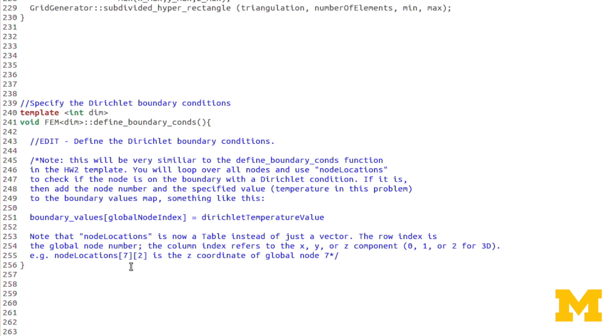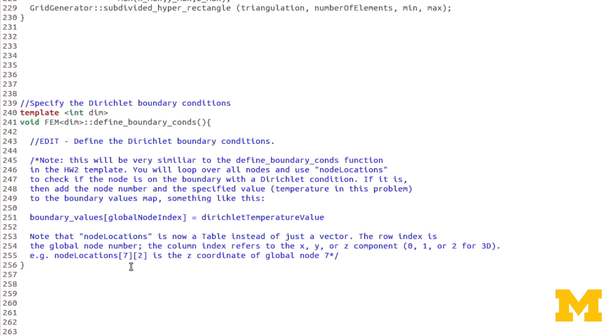Note that node locations, in this case, is still a vector. Where the row index corresponds to the global node number, and the second index corresponds to the component of the vector. So is it your X, Y, or Z? In this case, there are three columns in this table, and 0, 1, and 2 correspond to the X, Y, and Z components of the location of each node.